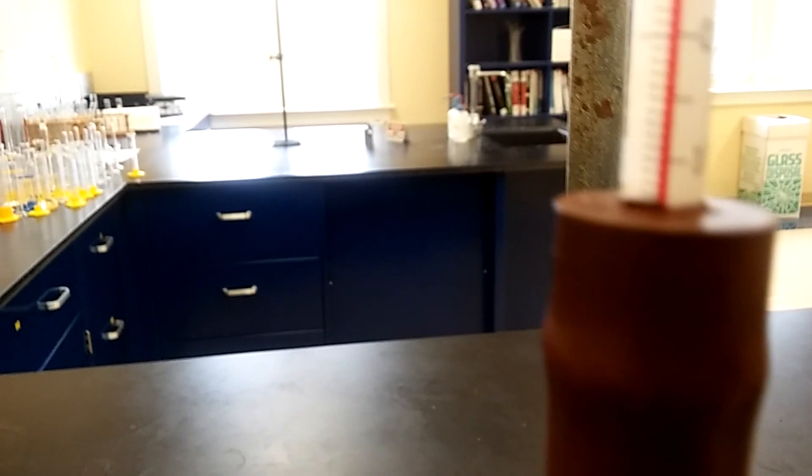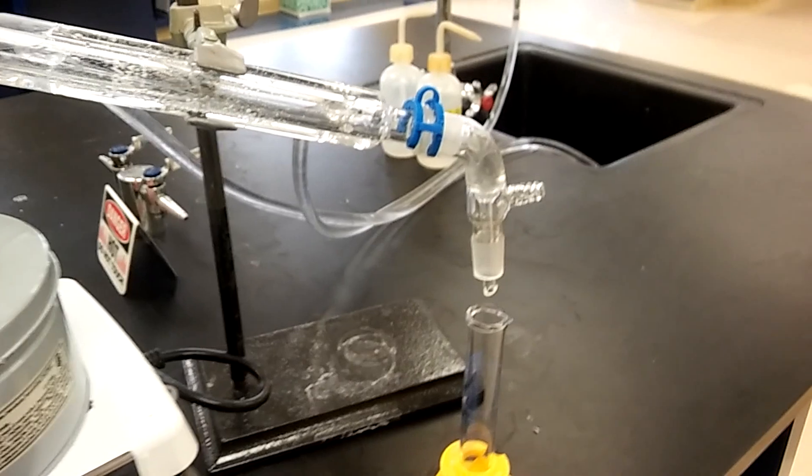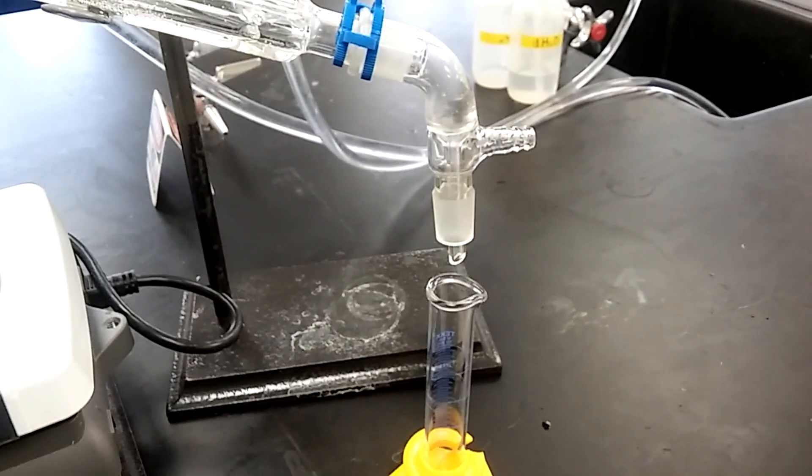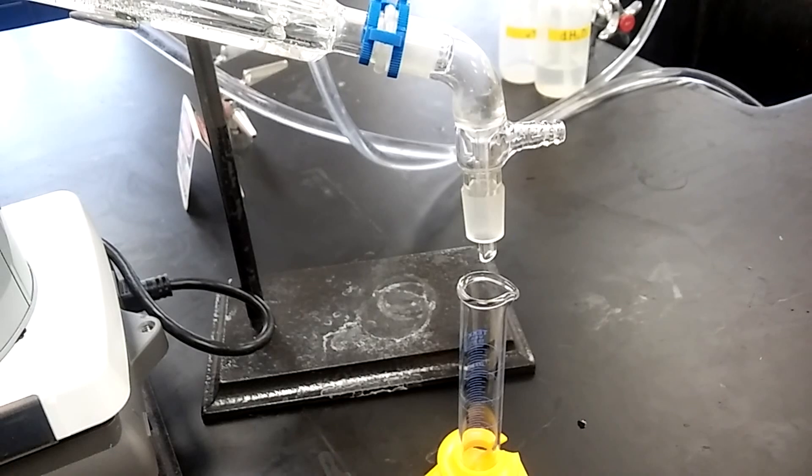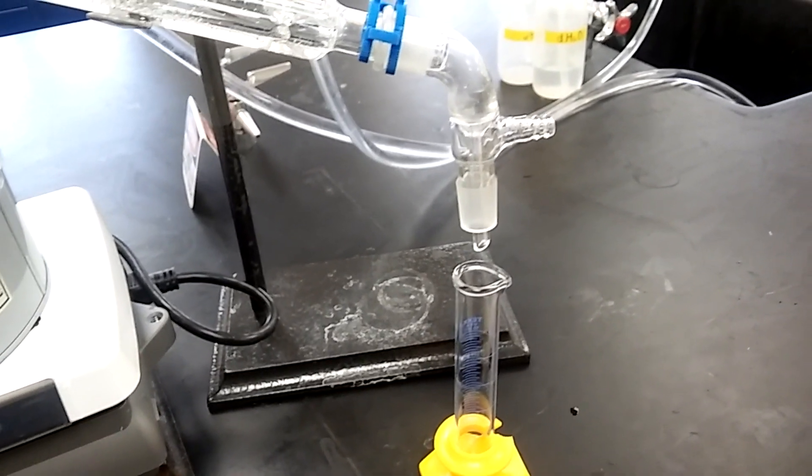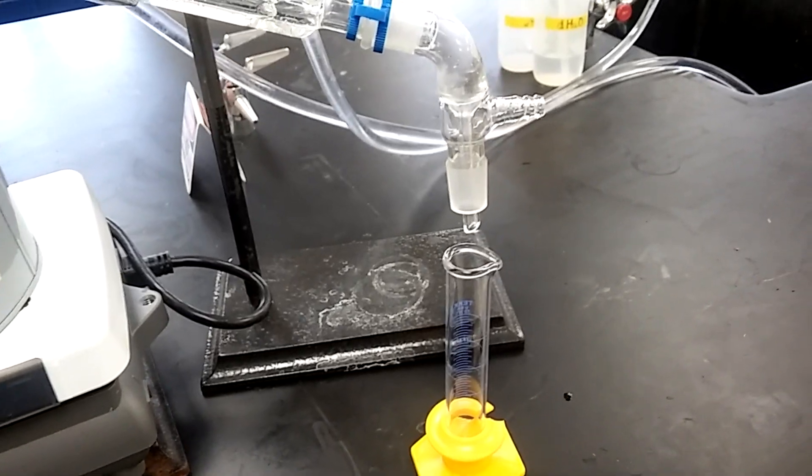We're gonna collect whatever comes through before 49 into this flask, and I will immediately switch it to a different flask at 49. I will collect anything that comes between 49 and 52 and then I'm done with the lab.